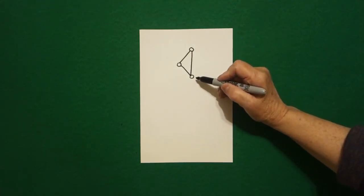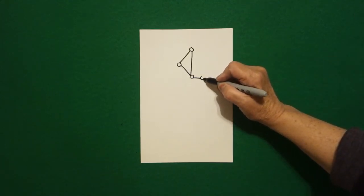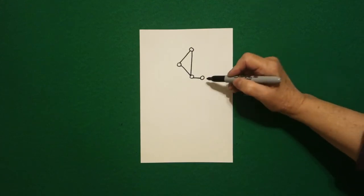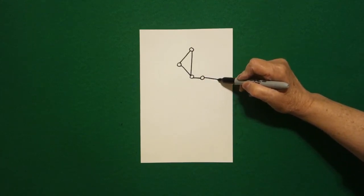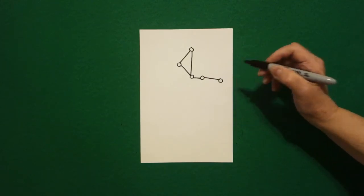Down here at the bottom I'm going to draw a little straight line out and a baby circle. From there I'm going to draw a longer straight line out and a baby circle.